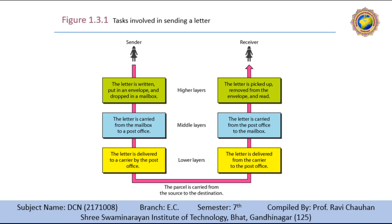The layered model that dominated data communication and networking literature before 1990 was the Open System Interconnection, called the OSI model. Everyone believed the OSI model would become the ultimate standard for data communication, but this did not happen. The TCP/IP protocol became the dominant commercial architecture because it was used and tested extensively in the internet. The OSI model was never fully implemented. In this module, we are going to see first the OSI model, then concentrate on the TCP/IP protocol suite.